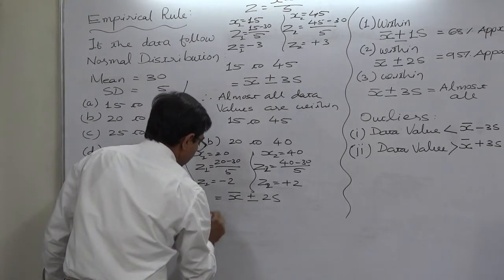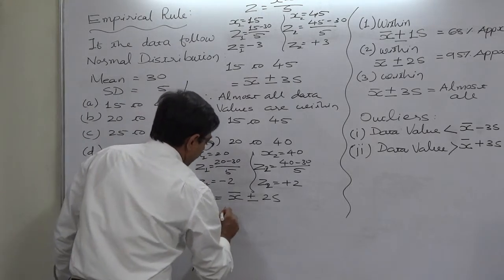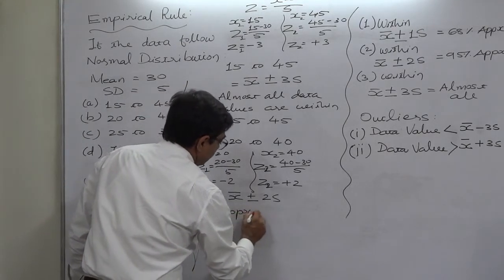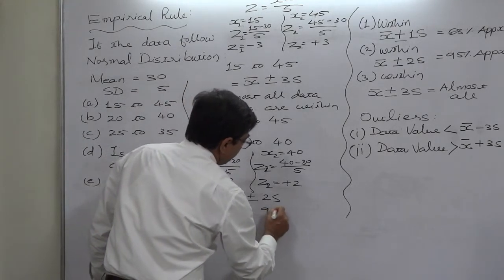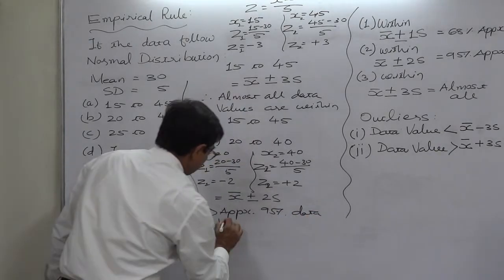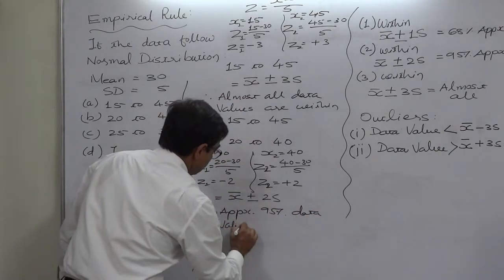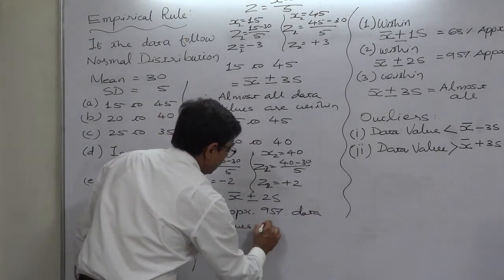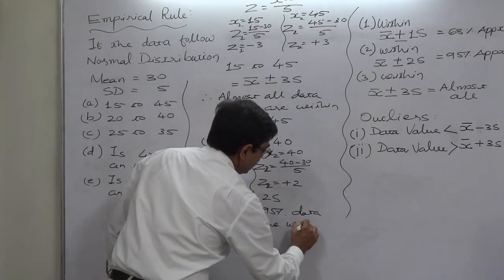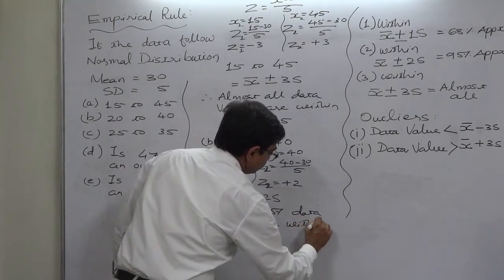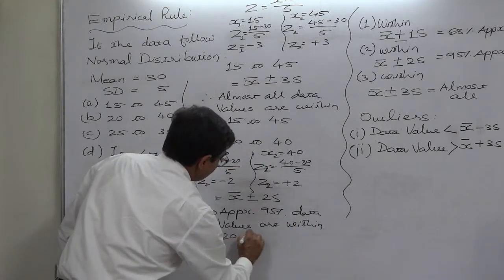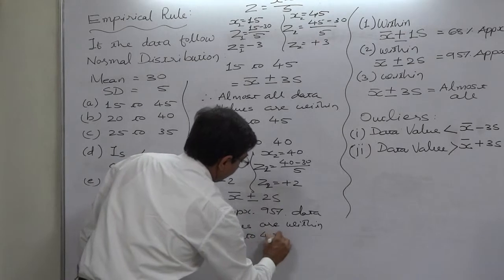Therefore, approximately 95% of data values are within the range 20 to 40.